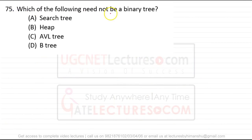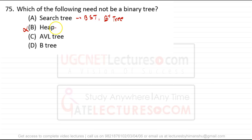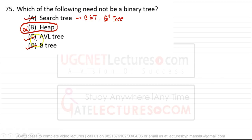Question 75: which of the following need not be a binary tree? Search trees (binary search trees, B+ trees), AVL trees, and B-trees are all binary trees. However, heaps do not need to be binary trees — they can be Fibonacci heaps or binomial heaps, which can have more than two children. So heaps are not necessarily binary trees. Answer is B: heap.